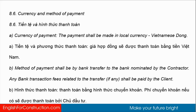8.6 Currency and Method of Payment. A) Currency of payment: The payment should be made in the local currency, Vietnamese Dong. B) Method of payment should be by bank transfer to the bank nominated by the contractor. Any bank transaction fees related to the transfer, if any, should be paid by the client.